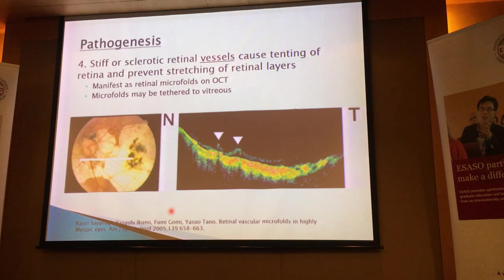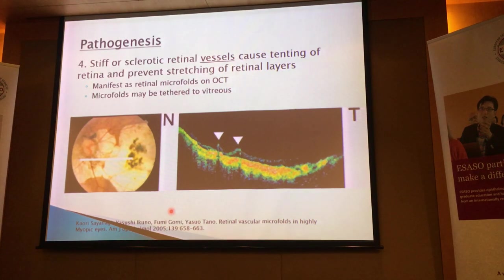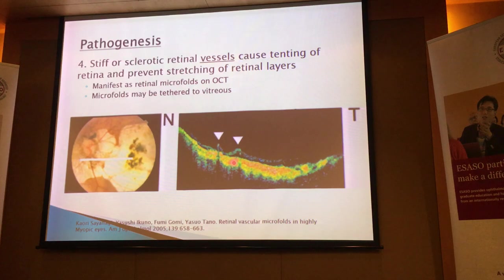What about the fourth pathogenesis possibility? It is that perhaps the retinal vessels undergo sclerosis with age. They become stiff and can cause tenting of the retina. So instead of bending and following the contour of the staphyloma as it begins to develop, the vessels actually stick out and cause traction. This OCT has been published by Yasuo Tano's group, showing that these areas with arrows are what they call retinal microfolds on the OCT, where the blood vessels are actually standing out proud and causing traction.